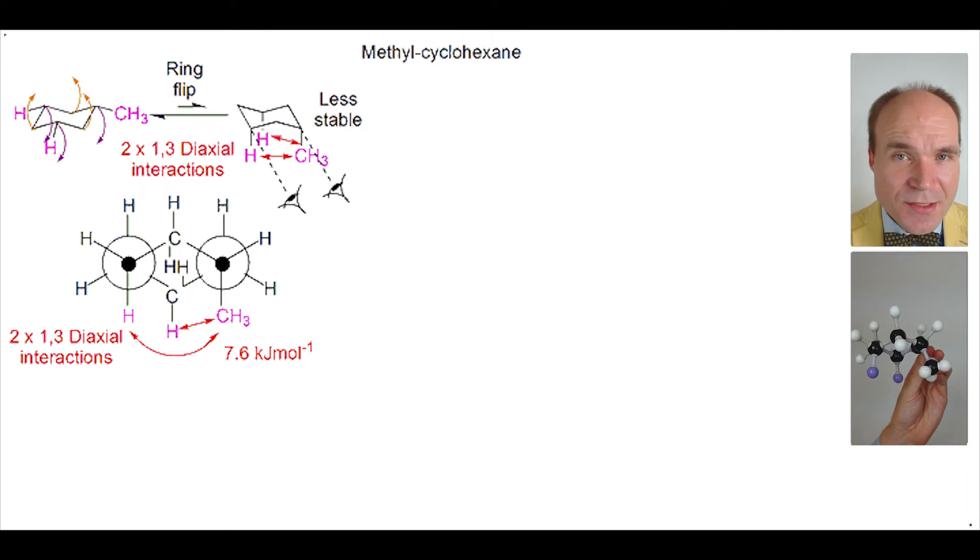Each hydrogen methyl 1,3-diaxial interaction contributes 3.8 kilojoules per mole of energy to the molecule. So because we have two such interactions in this molecule, they have created a total of 7.6 kilojoules per mole extra energy.